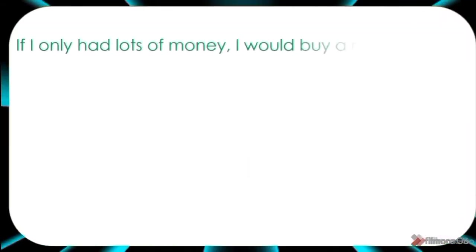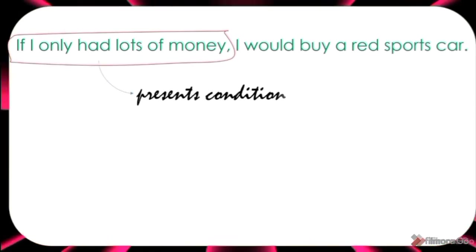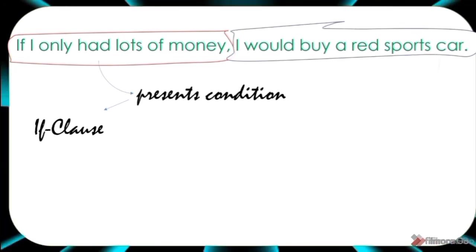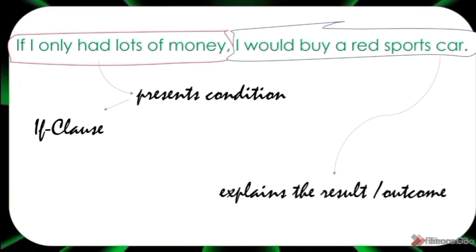Now let's analyze this sentence: If I only had lots of money, I would buy a red sports car. This group of words presents a condition and is introduced by if. In that case, we call it the if clause. While these words explain the result or the outcome of the condition, we call it the main clause.